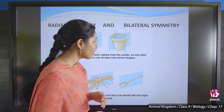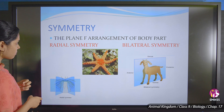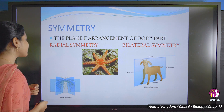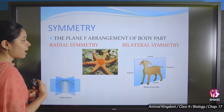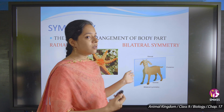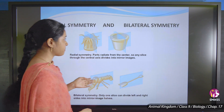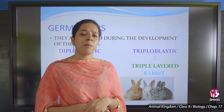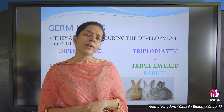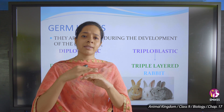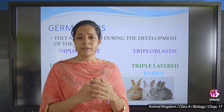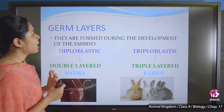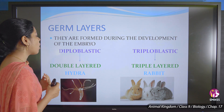Examples of radial symmetry are starfish and jellyfish. Examples of bilateral symmetry are goats and human beings. Next is germ layers — the outer, middle, and inner layers that form during the development of the embryo inside the mother's womb.